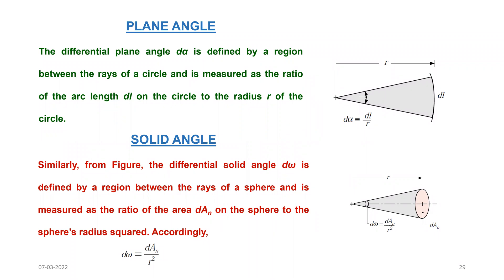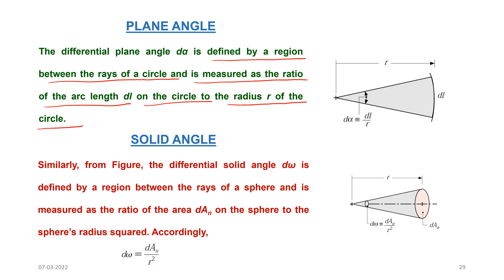In this lecture I am going to talk about the plane angle and the solid angle. The differential plane angle dα is defined by a region between the rays of a circle and is measured as the ratio of the arc length dl on the circle to the radius r of the circle. So dα is given by dl divided by r. You have been using plane angle many times. Now we will proceed to the solid angle.